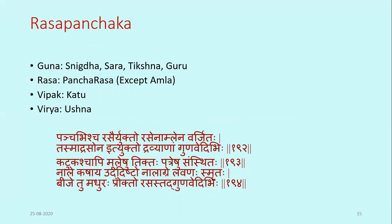The sloka from Bhavaprakash Nighantu states: Pancha Visha Rasa Yukta, Rasa Na Amla Na Varjita — meaning Amla Rasa is absent. Katu Rasa is present in the root (Moola); Tikta Rasa in the leaf (Patra); Kasaya Rasa in the stem (Nala); Lavana Rasa at the tip of the stem (Nalagra); and Madhura Rasa in the seed (Bija). Thus, different parts of the plant contain different Rasas.